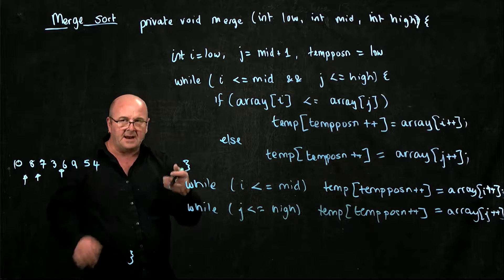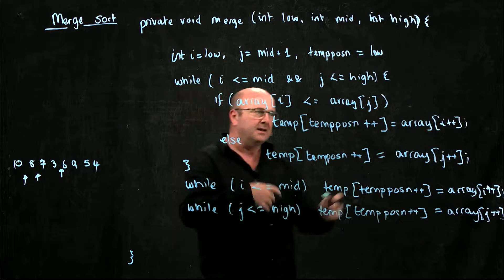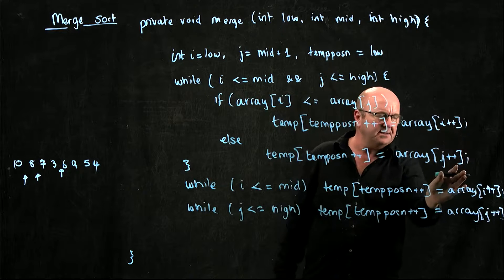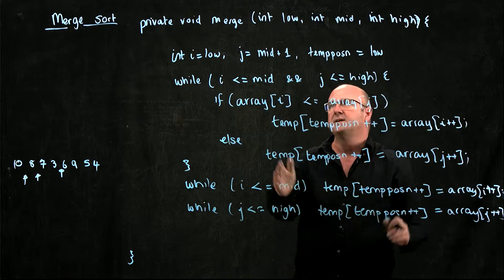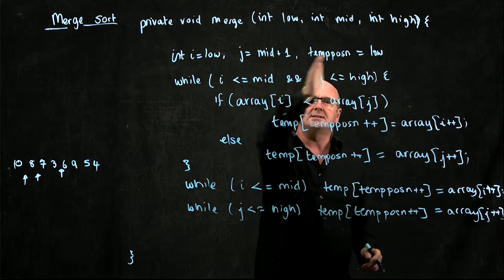So in our temporary array, we've copied over the i elements and the j elements, and we've made sure we've copied from low to mid and mid to high.